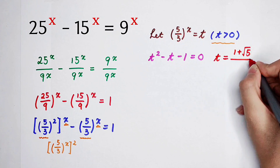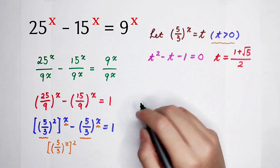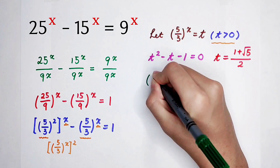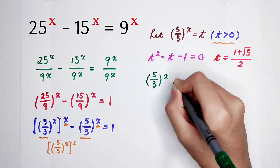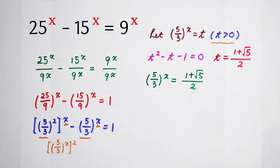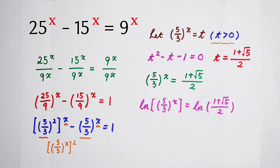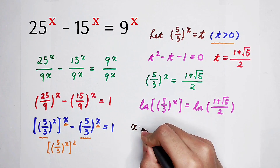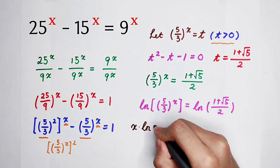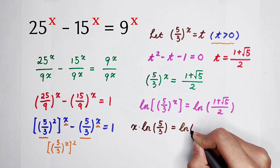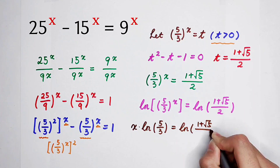So we have to find the positive root of this equation. t equals 1 plus square root of 5, all divided by 2. Now, since 5 over 3 all to the power of x equals t, solve the value of x from this equation using logarithms. Taking the natural log on both sides, x times the natural log of 5 over 3 is equal to the natural log of 1 plus square root of 5, all divided by 2.